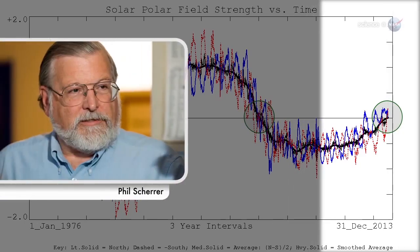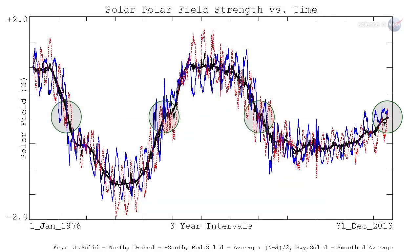Solar physicist Phil Shearer, also at Stanford, describes what happens. The Sun's polar magnetic fields weaken, go to zero, and then emerge again with the opposite polarity. This is a regular part of the solar cycle.